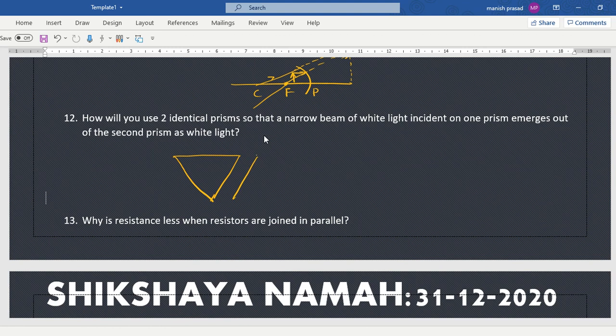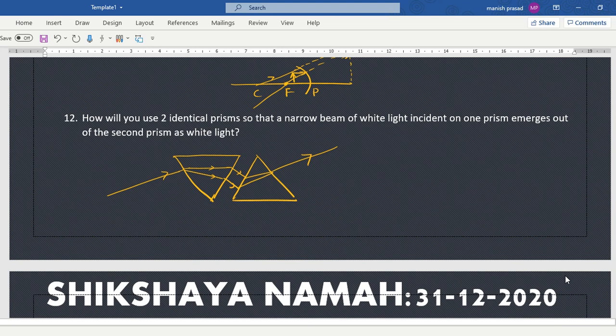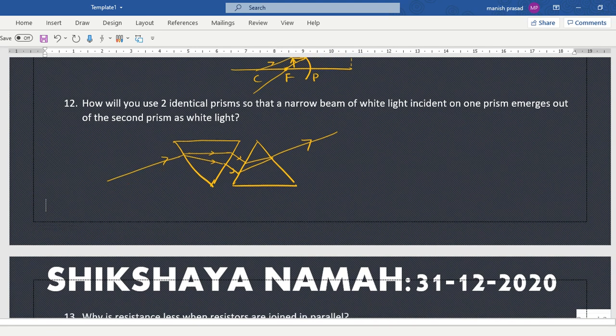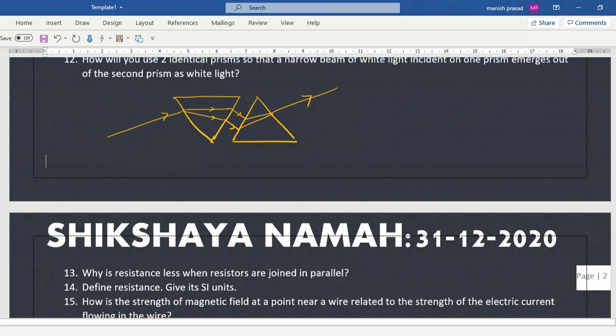How will you use two identical prisms so that the narrow beam of white light incident on one prism emerges out of the second prism as white light? Exactly, parallel and opposite. So the ray of light comes, it undergoes dispersion and refraction. And then the second one will also undergo dispersion and refraction, and then it will come and it is going to rejoin back. So you can see if you are making the diagram, what will happen, the teacher will understand that you know the concept.